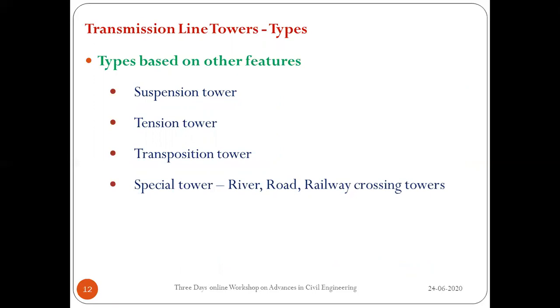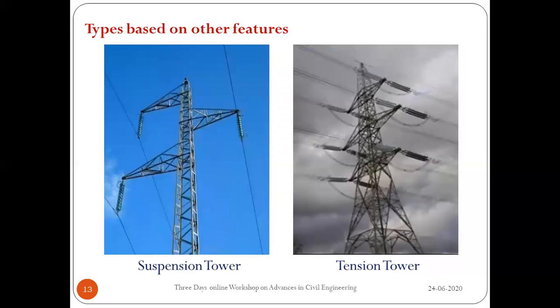Tower types based on other features: depending upon the hanging of insulators, towers are called suspension or tension towers. In a suspension tower, the insulator is hung freely from the tip of the cross arm. In a tension tower, the insulator is placed horizontally and participates in tension. Transposition towers are an electrical requirement where the R, Y, B phases are rearranged. Special towers such as river crossing, railway crossing, road crossing, and communication line crossing towers have increased height and design requirements.